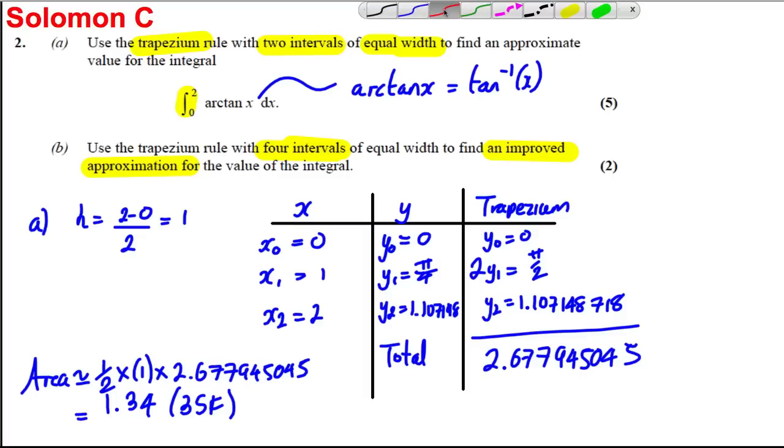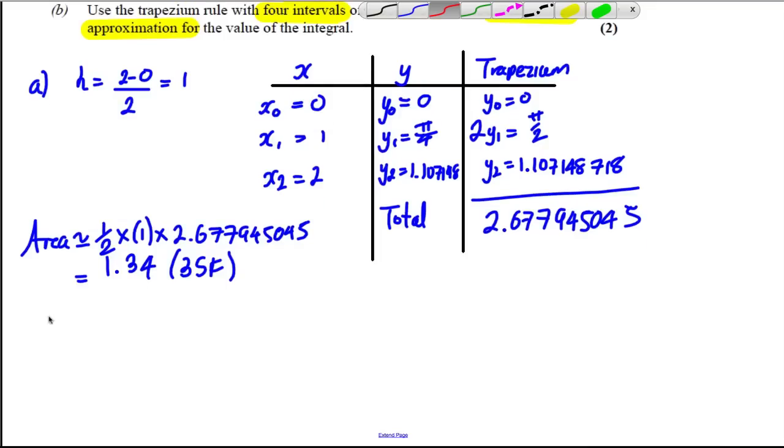Part B, we are going to have a new H. So our H is now equal to 2 subtract 0 over 4, which is 0.5. So we're going to have a new table, x, y, and the trapezium.